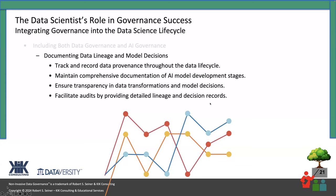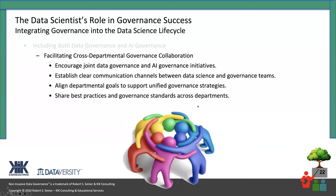Facilitating cross-departmental governance collaboration: if we can get data scientists to encourage joint data governance and AI governance, all of these activities require some time and attention of the data scientists. Do they have that time? Are they bought into the need for governance? Maybe that's where we need to start — getting them on board with what we're doing from a governance perspective and helping them understand what role they play in successful governance.